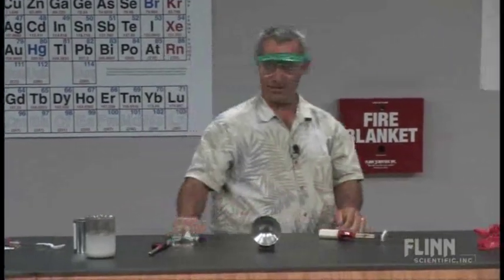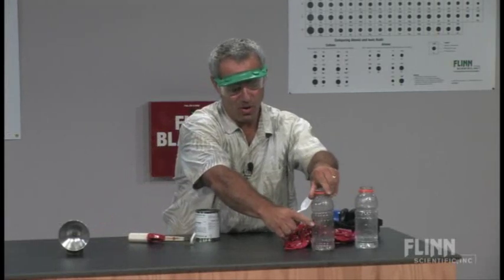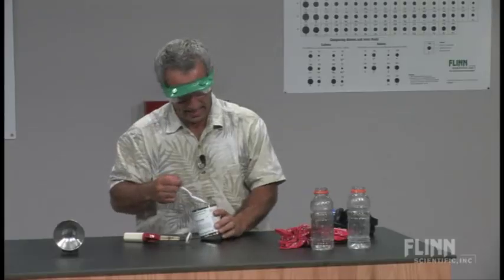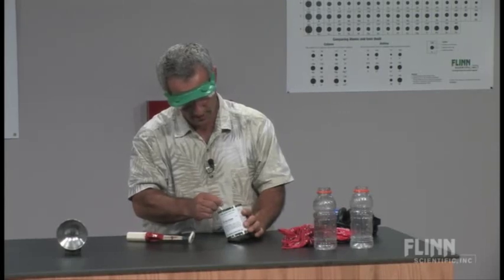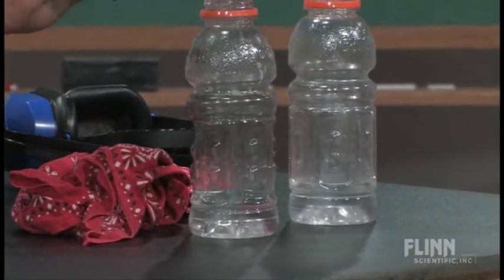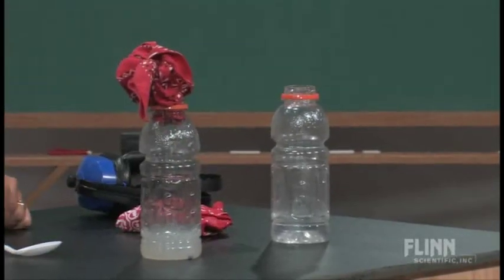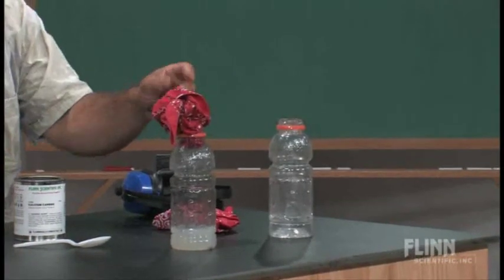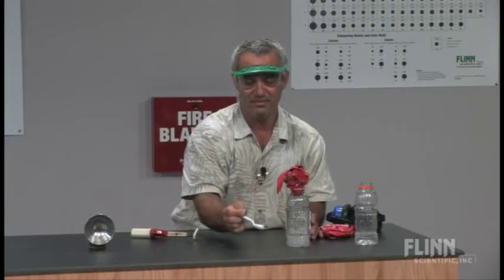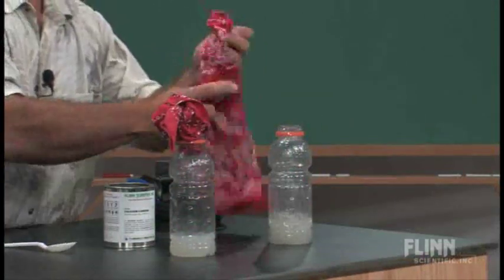I've got some water in the bottom of these Gatorade containers with the labels taken off, and I made a hole here in the sides of them. There's about 60 or 70 milliliters of water in the bottom. Into the first bottle I'm going to place just one nice-sized chunk of calcium carbide — just one piece — and I've got a bandana that I'm going to shove down in there. In the next one I'm going to be a little more adventuresome and put about 30 little pebbles of it in there, and shove a bandana down in there as well.